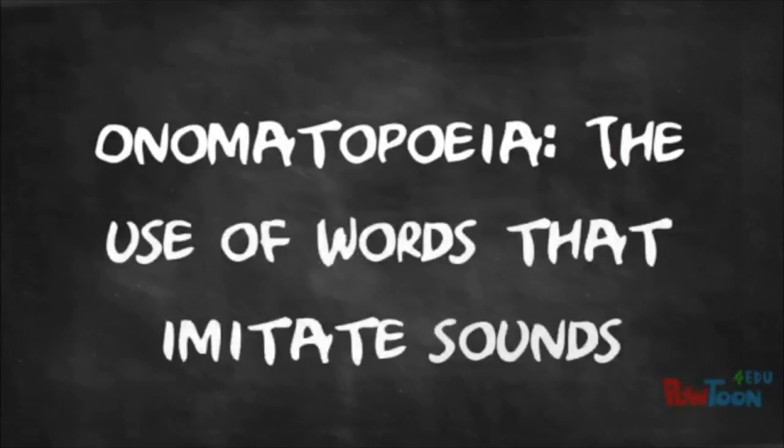Onomatopoeia is the use of words that imitate sounds. You might be asking yourself why do authors use onomatopoeia. Well, authors often use it to help the reader better hear particular sounds in writing. When it comes to poetry, words that convey onomatopoeia are often single syllable, which helps create rhythm. We often see onomatopoeia in comic books or comic strips, and also in children's books when kids learn about animals and the sounds they make.